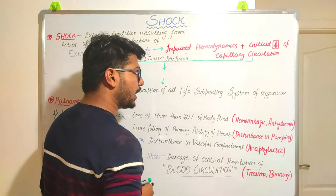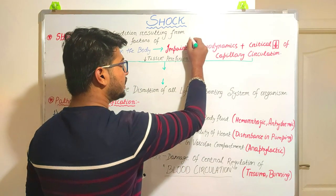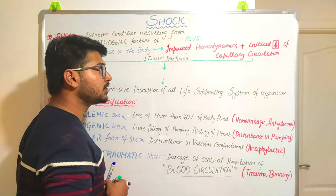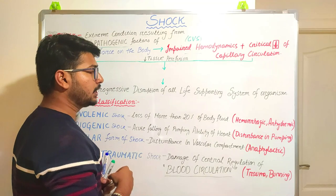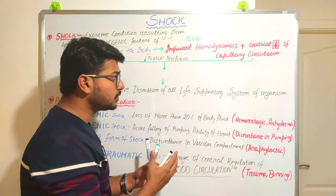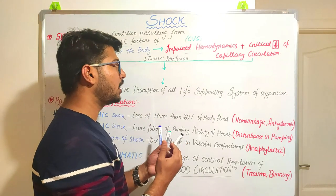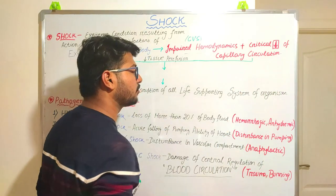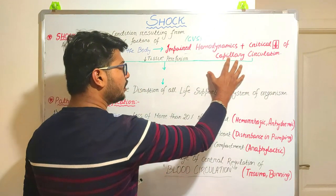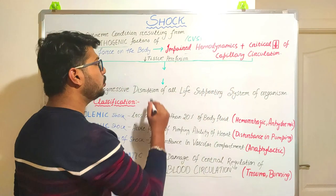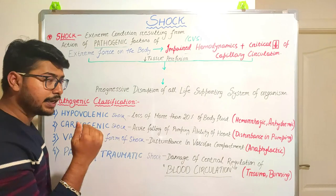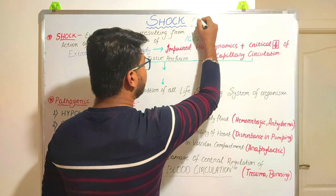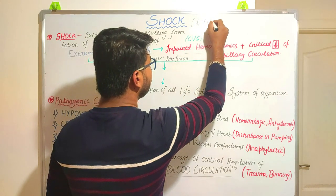In this impaired hemodynamics, there will be disturbance in the cardiovascular system — our heart will not function as before. There will be a decrease in cardiac output of the heart, plus a critical decrease of capillary circulation. If this occurs, it will lead to decreased tissue perfusion. So ultimately, shock is nothing but a decrease in tissue perfusion.